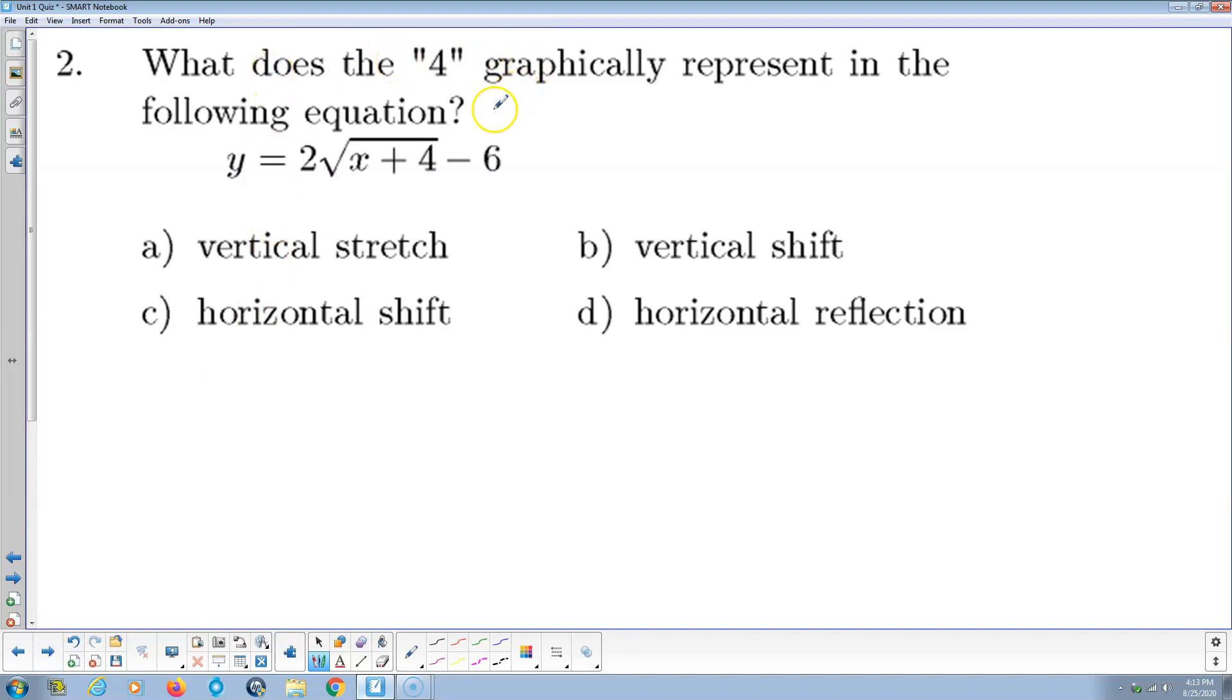What does the four graphically represent in the following equation? Well, the mother function here is the square root, and so this is adding on the inside. Adding is always the shift, and the inside means it's horizontal. So the four here represents a horizontal shift. And the shift on the inside is actually the opposite of the added number, so the shift will actually be in the negative direction to the left, but the four does represent a shift, whichever direction it means.